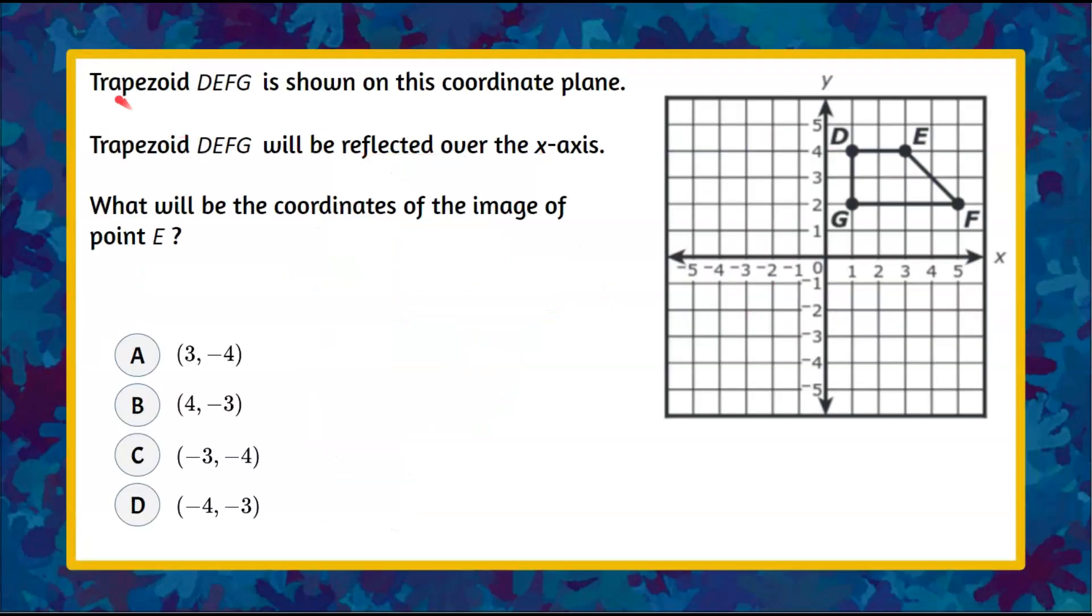Here's our question today. Trapezoid DEFG is shown on this coordinate plane. Trapezoid DEFG will be reflected over the x-axis. We are asked what will be the coordinates of the image of point E.